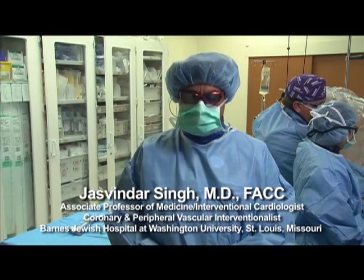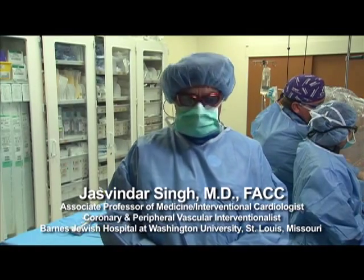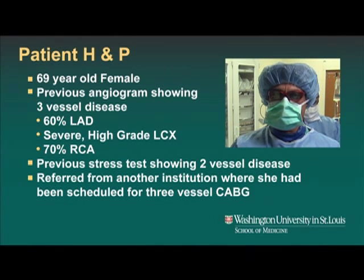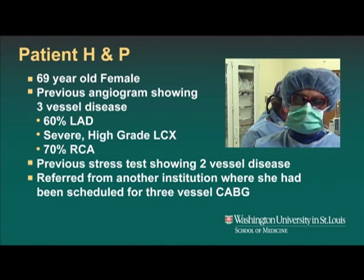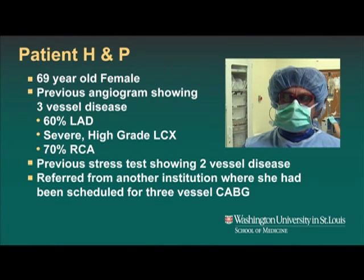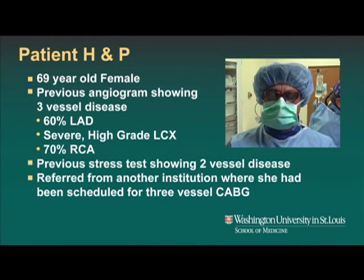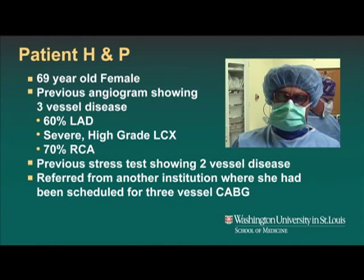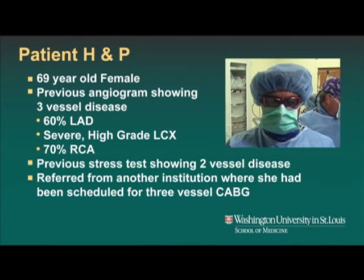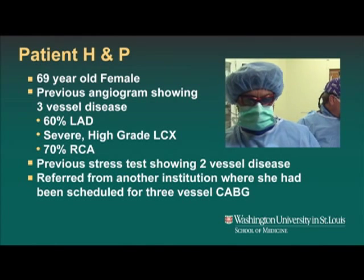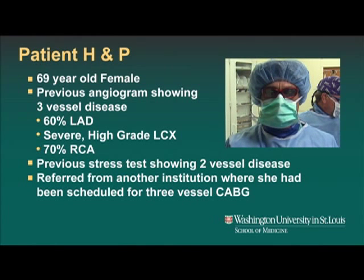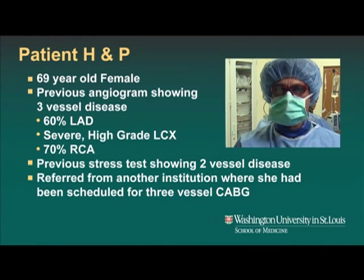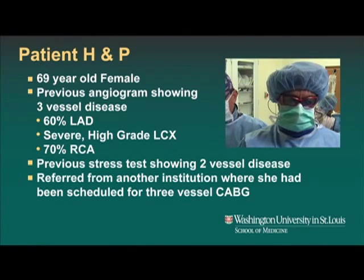What we are going to do today is a multi-vessel case — a 69-year-old female who presented from an outside hospital with typical angina. She had a cardiac catheterization there describing a 60% lesion in the proximal LAD, a high-grade lesion in the mid-circumflex obtuse marginal bifurcation, and an eccentric probably 70% lesion in the right coronary artery. She was offered coronary artery bypass grafting but was hesitant. Her stress test showed apical and large infralateral ischemia — two-vessel disease on stress test, and angiogram showed three-vessel disease.